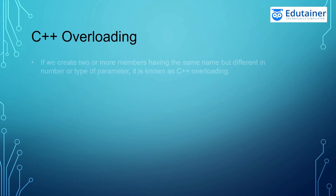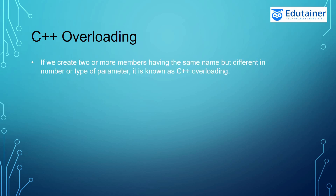C++ overloading: if it creates two or more members having the same name but different in number or type of parameter, this is known as C++ overloading. So in C++ overloading, we have two or more members having the same name but different parameters. We call it as overloading.